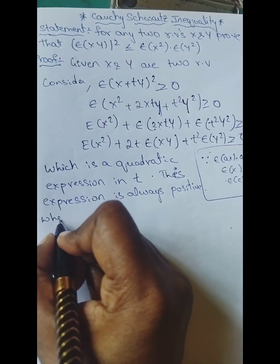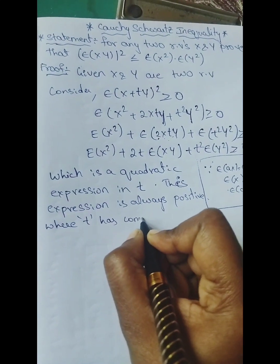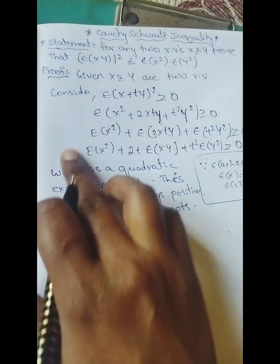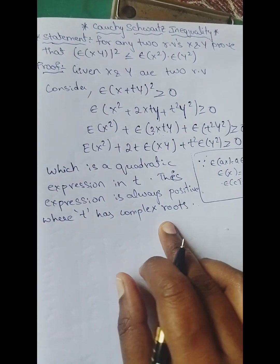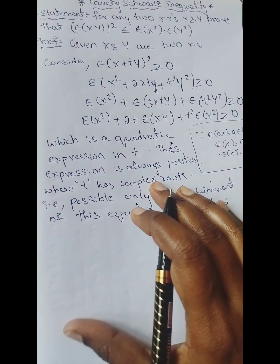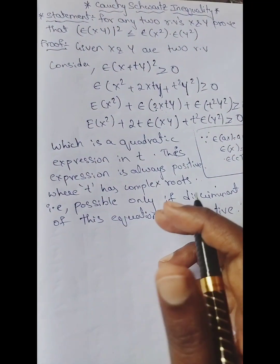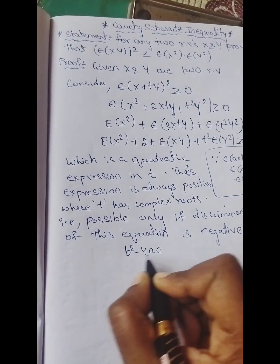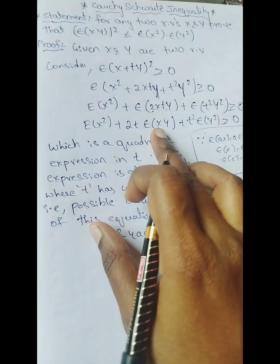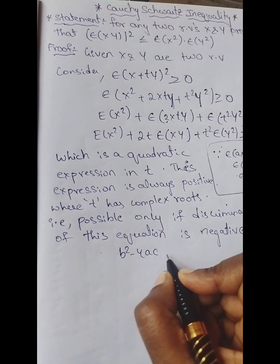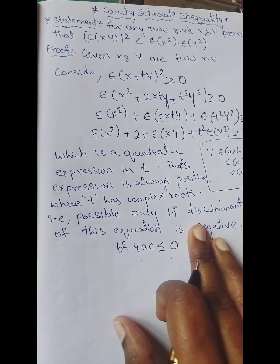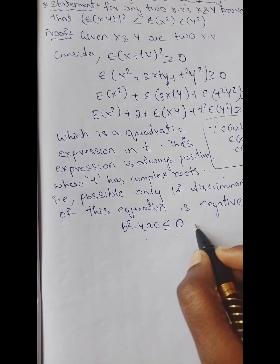Since this quadratic expression in t is always positive (≥ 0), t has complex roots. t has complex roots only if the discriminant is negative — that is, the discriminant b² − 4ac must be less than or equal to 0. So the discriminant of this equation must be less than or equal to 0. Take this as equation 1.